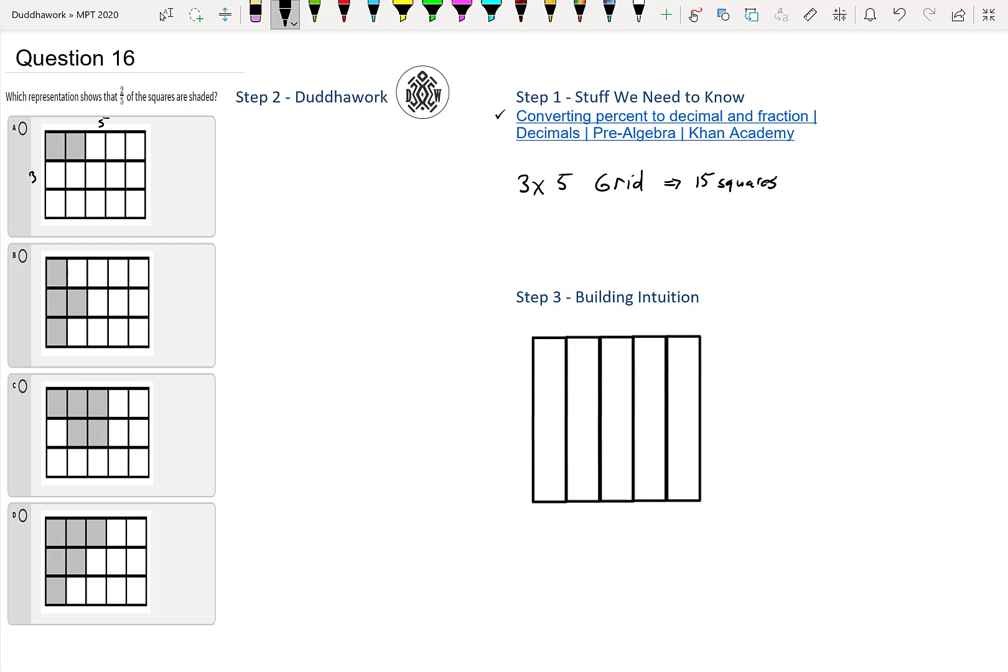You could count them by hand, it would be one, two, three, four, five and then three rows of that. Or there's five columns of three squares, same thing. I encourage you to try this question by yourself but we're about to solve it here.